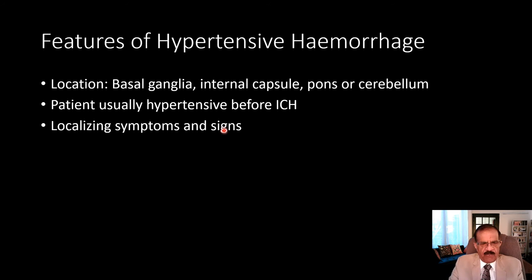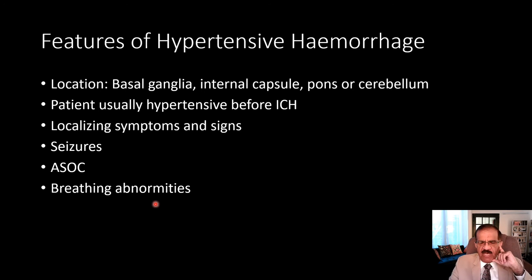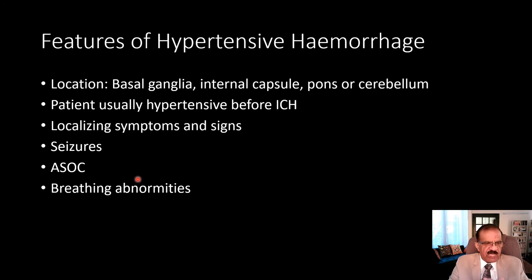There would also be additional symptoms due to raised intracranial pressure. When the hematoma expands and tears the brain, it may lead to seizures and altered state of consciousness — patient may be drowsy, confused, stuporous, or frankly comatose depending on the degree of raised intracranial pressure. If the hematoma pushes the brain and the brain stem herniates into the foramen magnum, it could cause breathing abnormalities — Cheyne-Stokes breathing, Biot's breathing, or apneic spells.